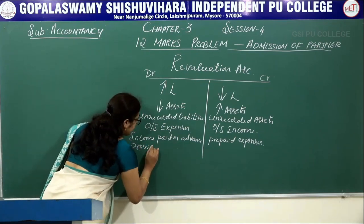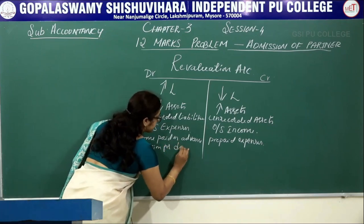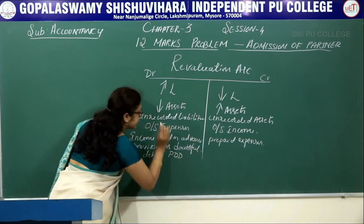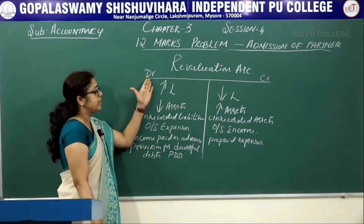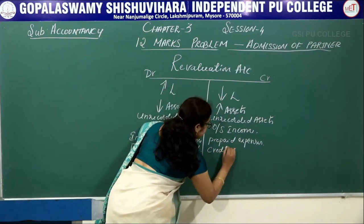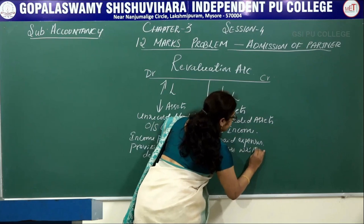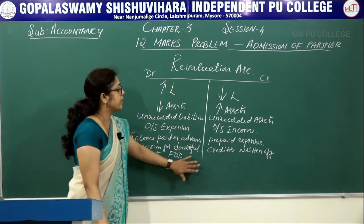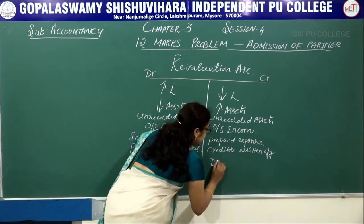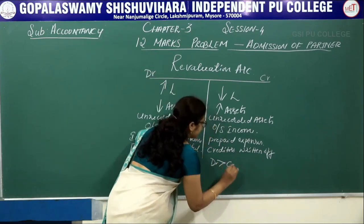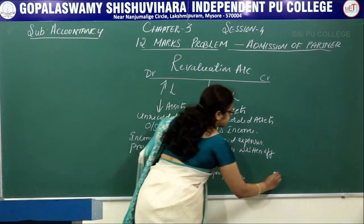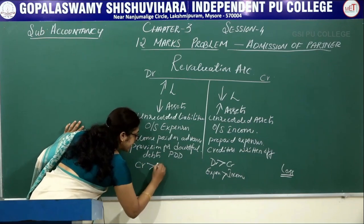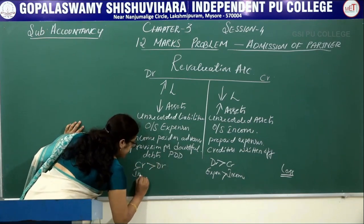Prepaid expenses are recorded on the credit side of the revaluation account. Provision for doubtful debts (PDD) is recorded on the debit side of the revaluation account. Credits written off are also recorded on the debit side. After recording all these items, if the debit side is greater than the credit side, you get a loss.